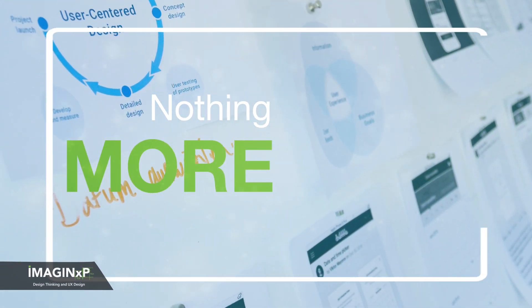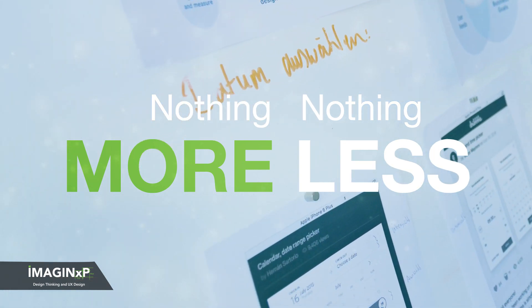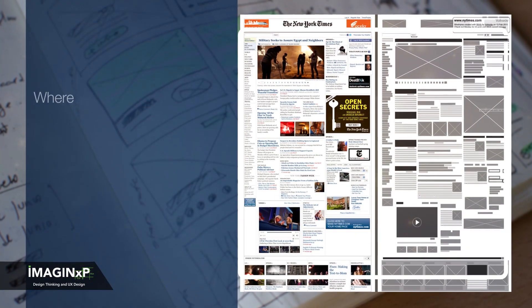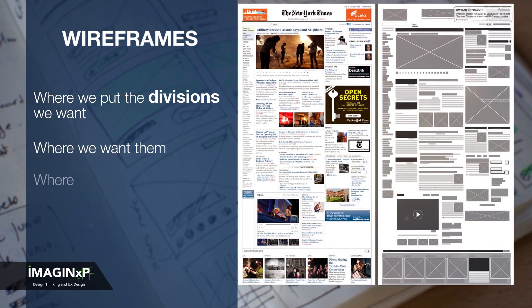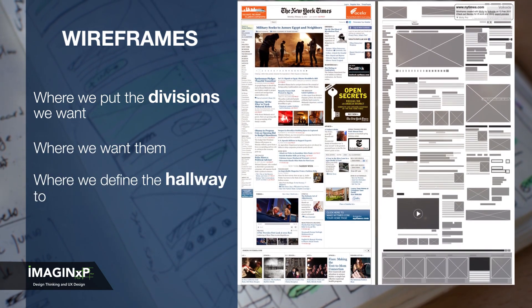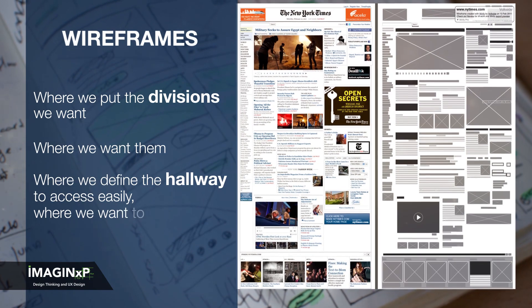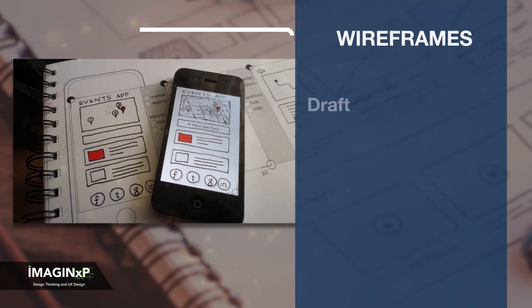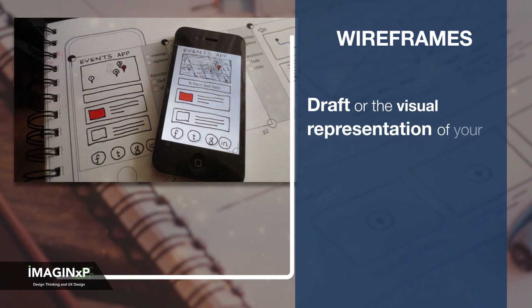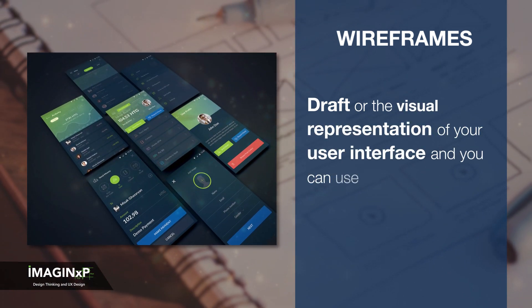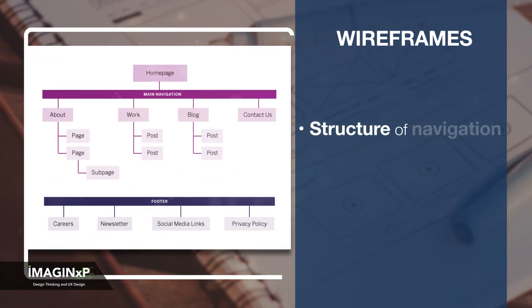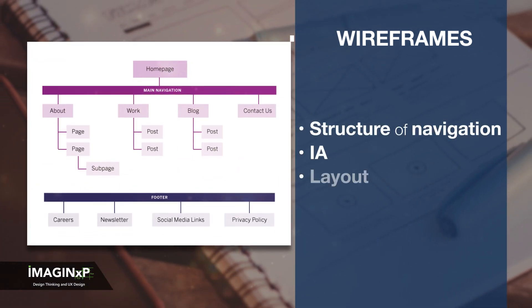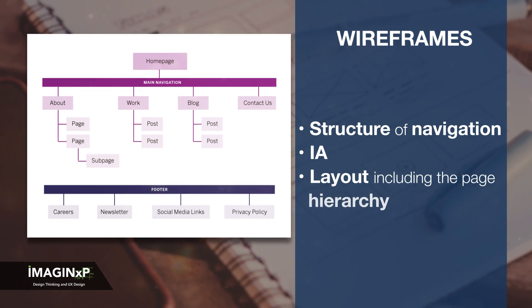A wireframe is nothing more and nothing less than the structure of a home where we put the divisions we want and where we want them. It defines the hallways that allow us to access easily where we want to reach. You can use wireframes to communicate the structure of navigation, information architecture, and layout, including the page hierarchy.